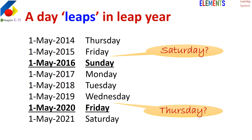If we take any date of a year — say, 1st May 2014, which was a Thursday — the same date the next year is a Friday. But the same date the year after that is not Saturday; it's Sunday. One day has jumped, so Saturday is missing — it leaps. Every fourth year, on the same date, the next day falls but one day is actually skipped. It leaps — that's where the word 'leap year' comes from.